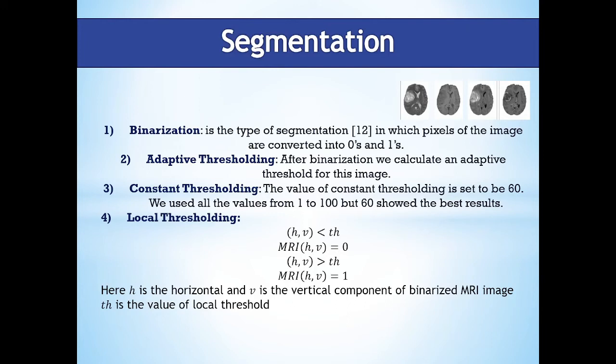After binarization, we calculate and apply adaptive thresholding. Pixels with higher intensities are grouped together to form one cluster and remaining pixels form another. For constant thresholding, the value is set to 60 — we tested all values from 1 to 100 and 60 showed the best results. For local thresholding, if a pixel of the image is less than the constant threshold value, it is set as background; otherwise it is set as foreground. Here, r represents the horizontal and v is the vertical component of the binarized MRI image, and Th is the value of the local threshold.